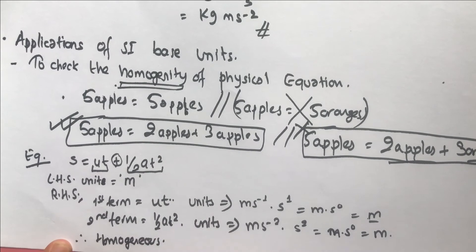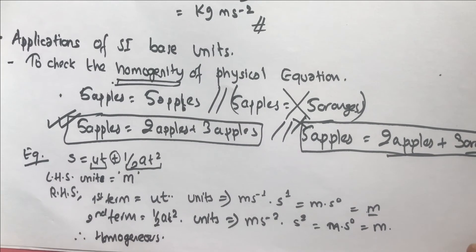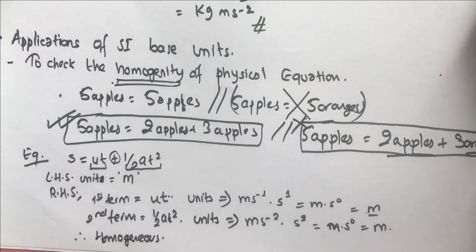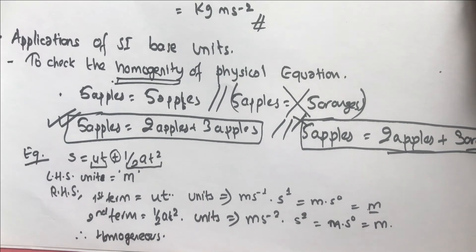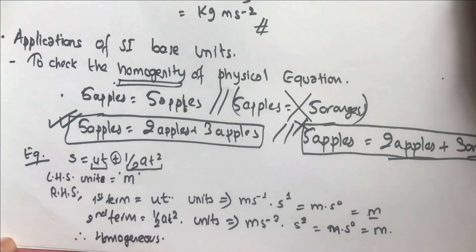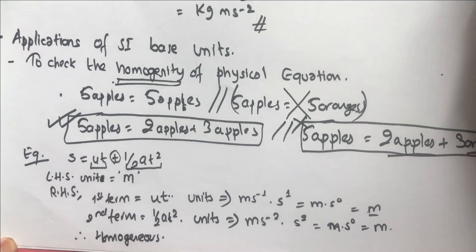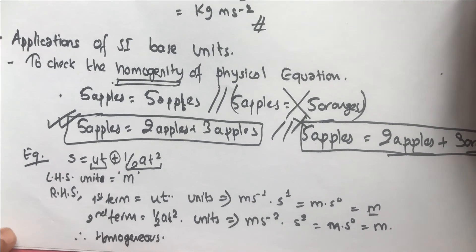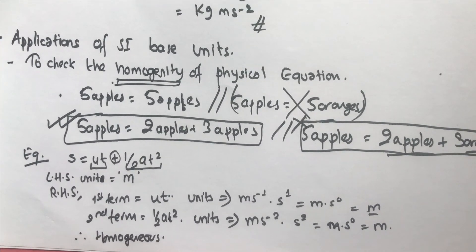Checking homogeneity is a very important application in physics. Whenever we come up with a new equation, we have to check if it is homogeneous. All equations that are correct in physics are homogeneous — if they are not homogeneous, the equations are never correct.